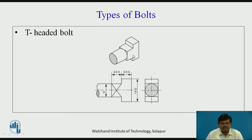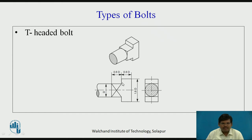T-headed bolt has a square shoulder as seen in the previous type. This type of bolt is mostly used for clamping purposes on machines like drill or lathe machines, to clamp the object or job to the machine, giving better clamping applications. The parametric dimensions are shown on screen.